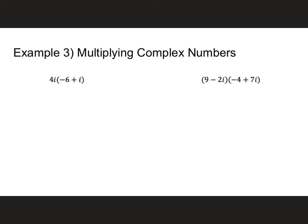What about multiplication? Multiplication works the same way. In this first problem, we just distribute. So 4i times negative 6 is negative 24i. And then 4i times i is 4i squared — just like with variables. Here's the only difference: remember that i equals the square root of negative 1. When you square both sides, i squared equals negative 1. This is the real big difference between i and a variable.